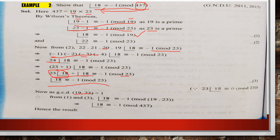Since GCD(19, 23) = 1, using equations 1 and 3 together we get 18! ≡ -1 (mod 19 × 23), so 18! ≡ -1 (mod 437). Hence proved. The key steps in this type of question are: first factor the modulus into primes, apply Wilson's theorem for each prime, and then simplify.